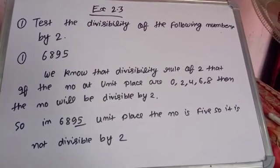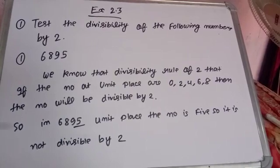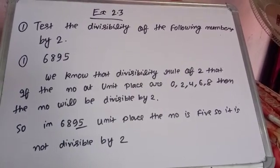we know that divisibility rule of 2 is that if the number at unit place are 0, 2, 4, 6 and 8, then the number will be divisible by 2.